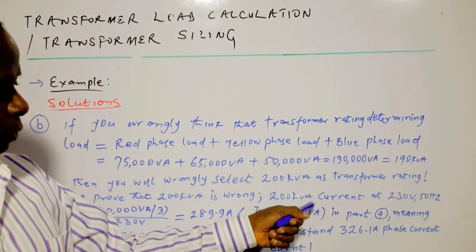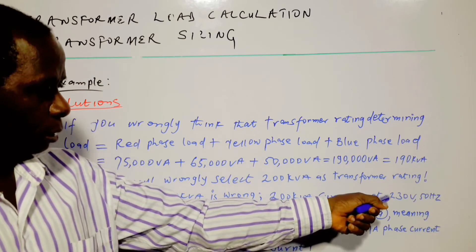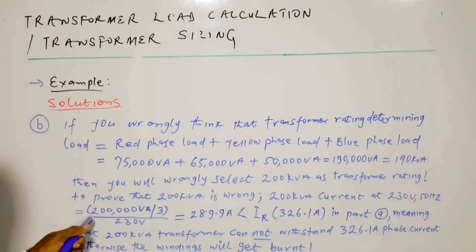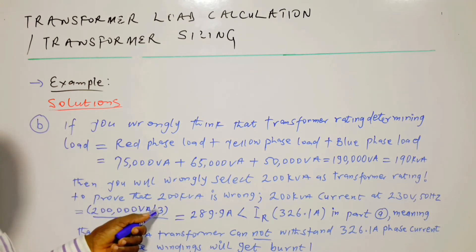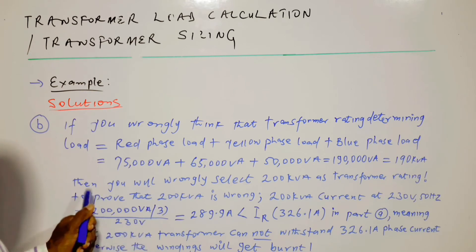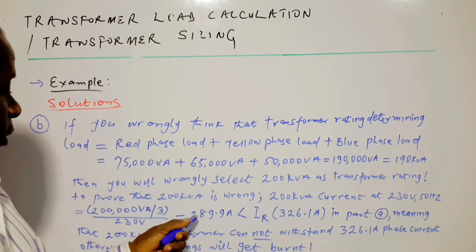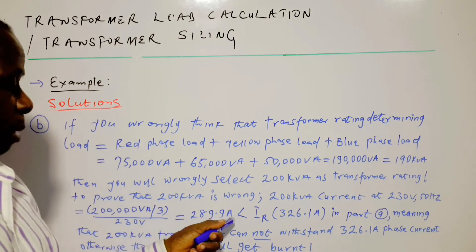And to prove that 200 kVA is wrong, 200 kVA current at 230 volts and 50 hertz is equal to 200,000 VA divided by root 3, and then the result to be divided by 230 volts. That's 200,000 VA divided by root 3, and then the result to be divided by 230 volts. The output gives us 289.9 ampere.